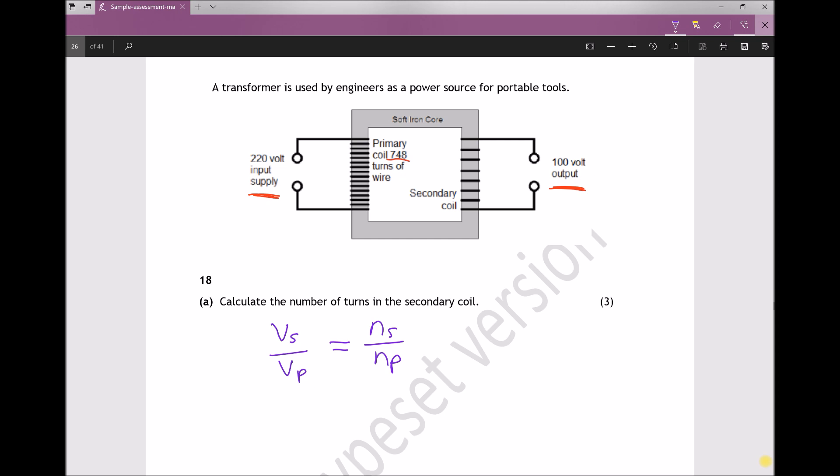In this instance, we're trying to find the number of turns on the secondary coil, or N subscript S. So to get that on its own, I need to multiply each side of this equation by NP. So multiply by NP each side.